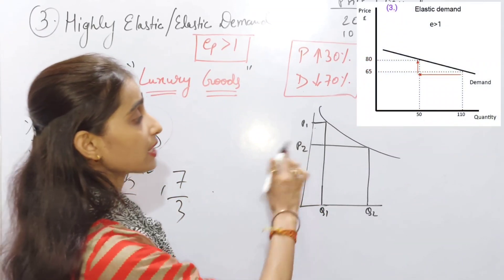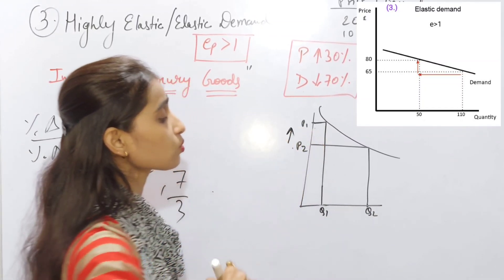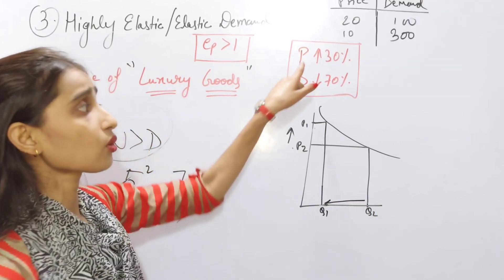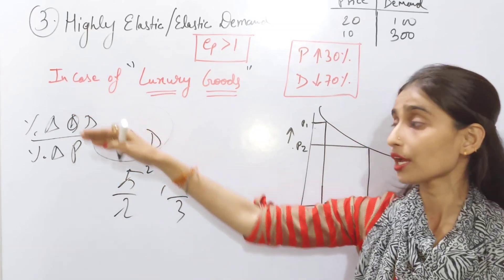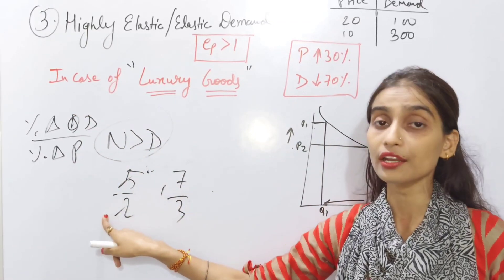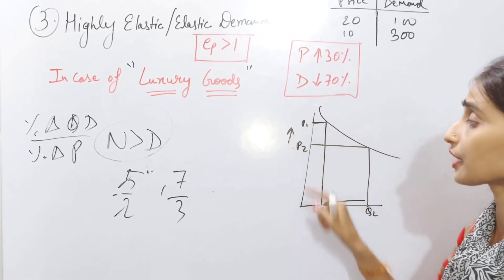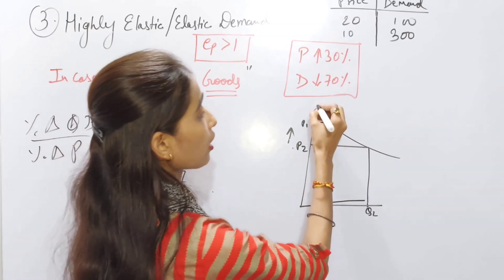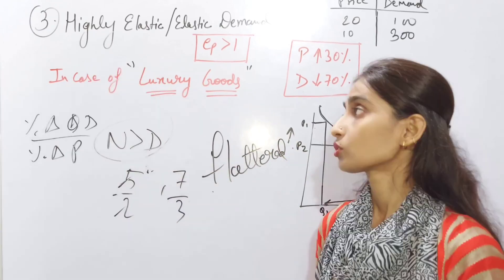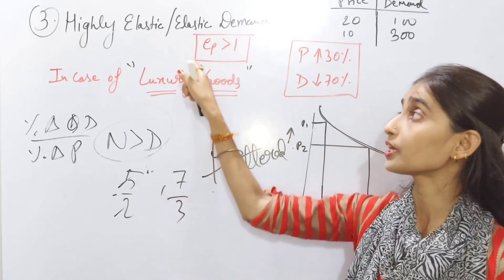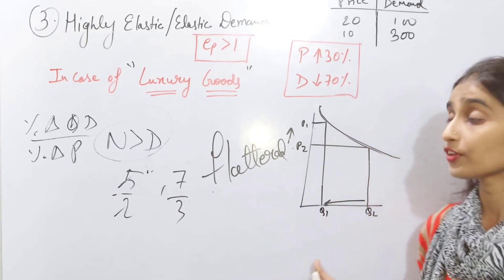For example, if price was P2 and demand was Q2, when price rises to P1, demand falls from Q2 to Q1. If the price increases by 30%, demand decreases by 70% — the demand change is more than the price change. When the numerator is greater than the denominator, EP is always greater than 1. In this case the graph is flatter. Graph name: flattered (flatter curve).